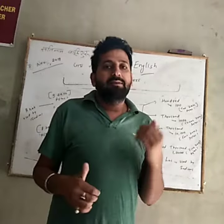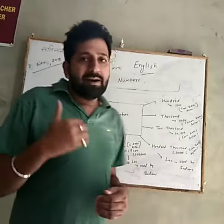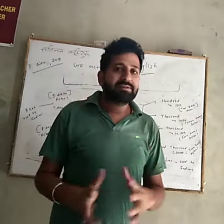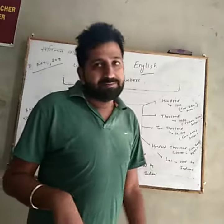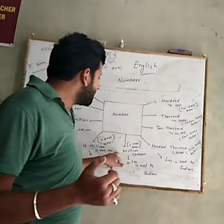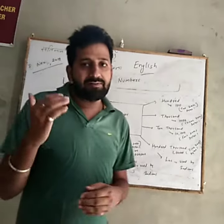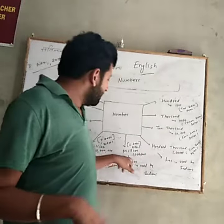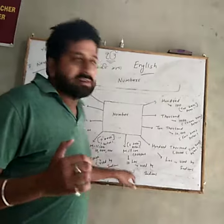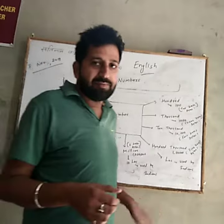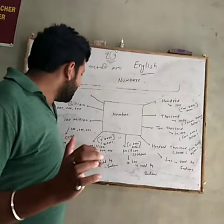Indians use 'one lakh,' but native speakers of English use 'hundred thousand.' And that is million — there are six zeros after one in a million. So do not use 'ten lakh' for million. Next is ten million.